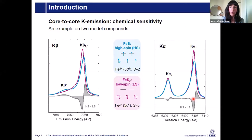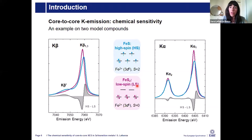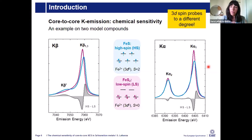Looking at an example with two model iron compounds — high-spin iron sulfide and low-spin iron disulfide — we see a lower splitting and an almost absent K-beta prime feature in the low-spin sample, demonstrating high sensitivity to spin state change in K-beta. K-alpha lines are sensitive as well: for the low-spin sample, much narrower widths appear in the K-alpha 1 and K-alpha 2 peaks. Both lines are probes of spin state, but to a different degree — the difference signal is about 65% for K-beta and around 40% for K-alpha.